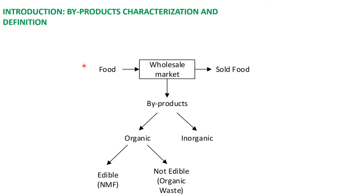Byproducts characterization and definition. The food arrives to the wholesale market where it's sold, and this process generates byproducts that can be divided in two categories: inorganic and organic. The inorganic fraction is, for example, the plastic used to protect the products during transport, while the organic fraction is divided into edible and not edible. The not edible fraction is, for example, the straw used to protect food during transport, while the edible fraction is the non-marketable food and will be the focus of this study.